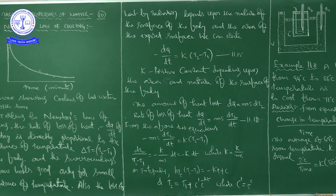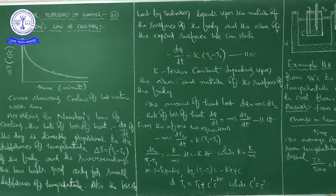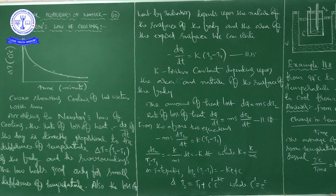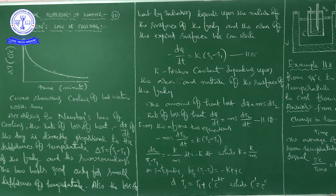This is the graph which shows the temperature difference — delta T, that is T2 minus T1. By taking T2 minus T1 on the y-axis and time on the x-axis, we draw a graph. From this graph, what information are we getting?